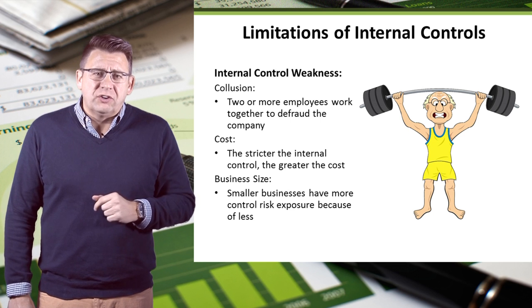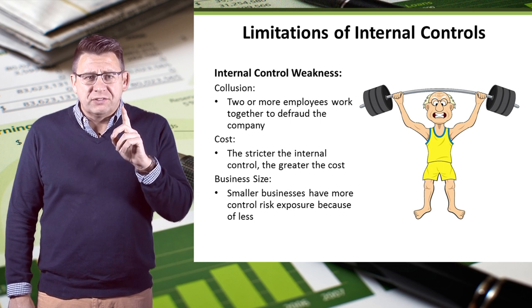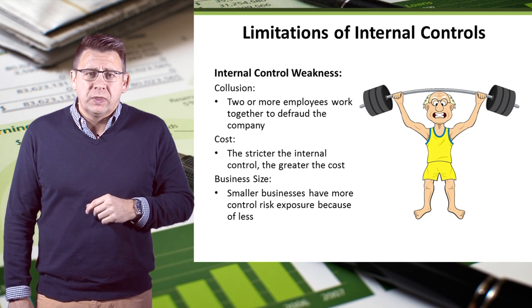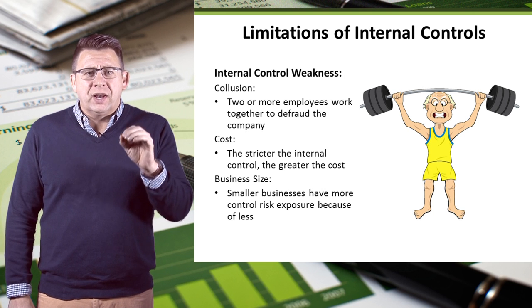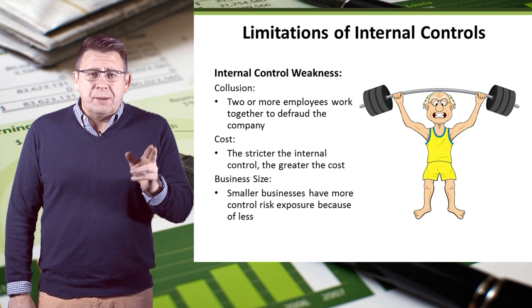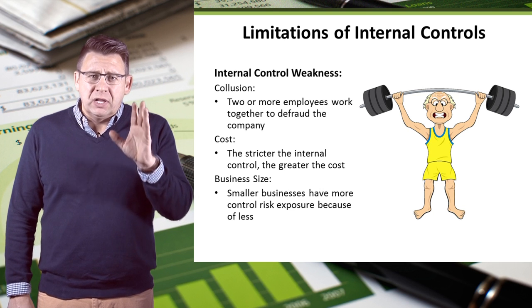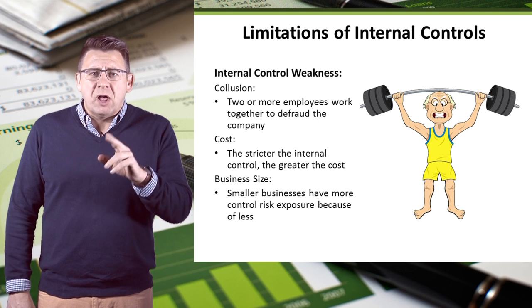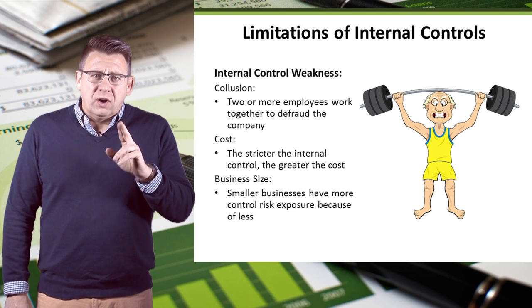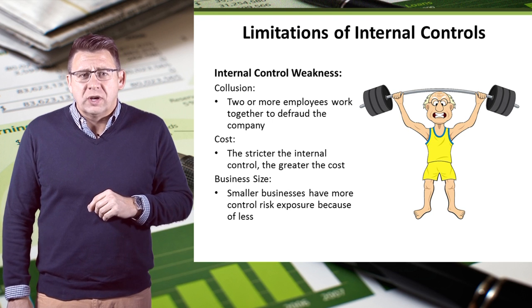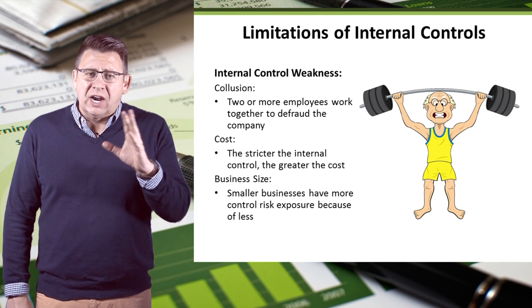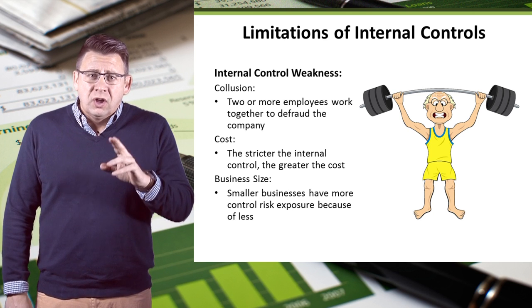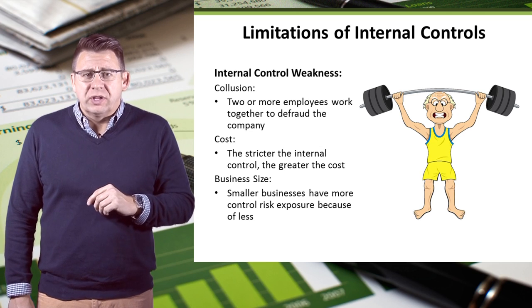There are limitations to internal controls. Separation of duties can be circumvented when two or more employees collude or work together to commit fraud. Internal controls must also be evaluated on a cost-benefit basis — for example, it wouldn't make sense to spend a million dollars on a vault to protect $10,000 of cash. Finally, small businesses are at more risk for fraud than larger ones, as they tend not to have the resources to hire extra personnel to ensure proper separation of duties or highly trained, competent employees.